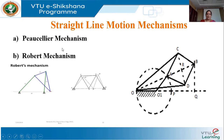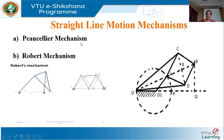The straight line motion mechanism is used to guide a cutting tool in a machine to trace exactly a straight line. That cutting tool must move in an exact straight line, and in that case we use the Peaucellier (exact straight line motion) mechanism. It is also used in cutting torches to move exactly in a straight line.